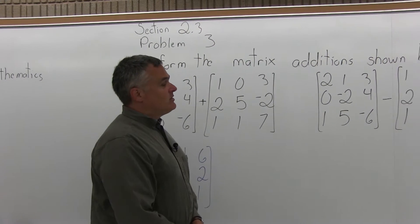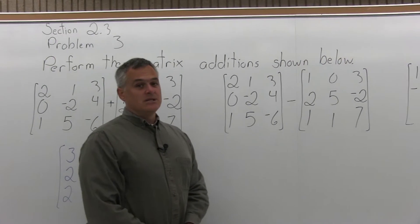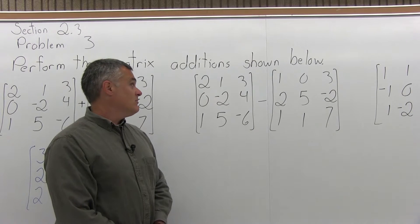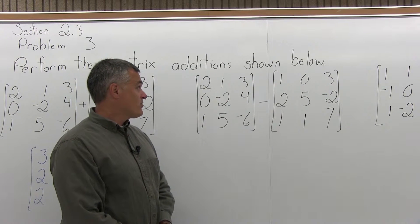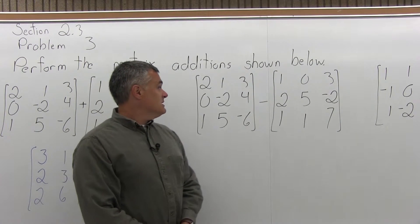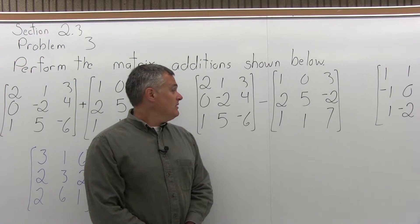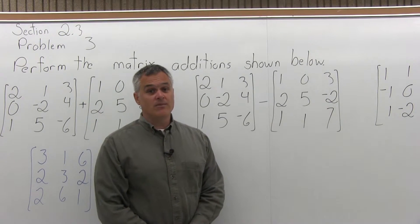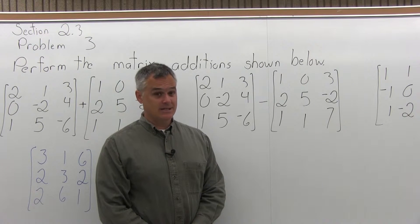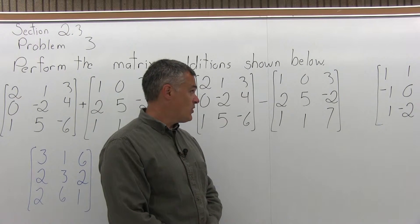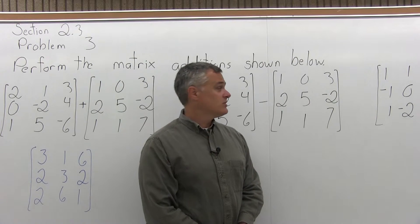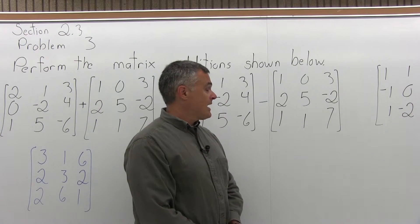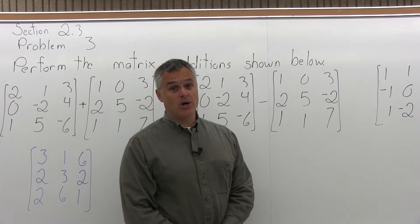Now the next one we have to do are the same two matrices except with a subtraction. So the same matrix from the left — 2, 1, 3 across the top, 0, negative 2, 4 in the middle, and then 1, 5, negative 6 across the bottom — except now it's minus the same matrix that was on the right before: 1, 0, 3 across the top, 2, 5, negative 2 in the middle row, and then 1, 1, 7 in the bottom row.